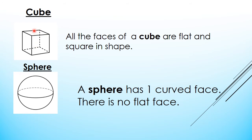Just count the number of faces: 1, 2, 3, 4, 5, and 6. There are six squares in this cube. All the faces of a cube are flat — none of them is curved. All the faces are square in shape: front, back, top, bottom, and side faces. So, you join six squares together and what do you get? You get a 3D shape called a cube.